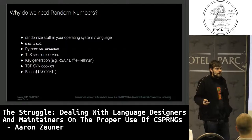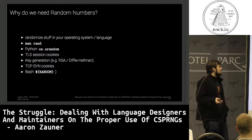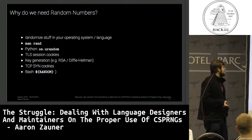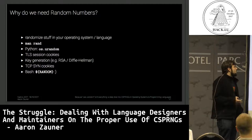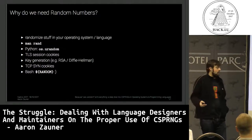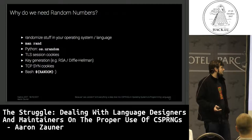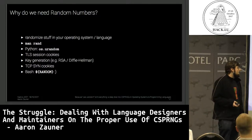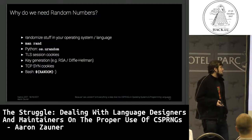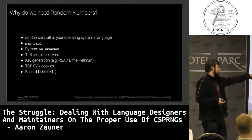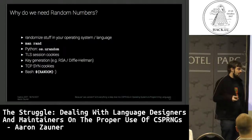Why do we need random numbers? You need to randomize stuff in your operating system or programming language. The easy example is the man page for rand or Python's os.urandom. One example would be TLS session tickets - these are randomized. Then there is key generation, for example for RSA keys and Diffie-Hellman. Another example would be SYN cookies in your TCP stack, and a really bad example is $RANDOM in bash, which will output a couple of random numbers.